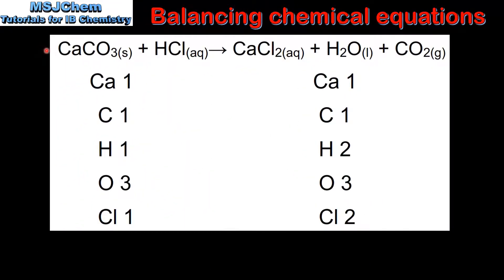In our next example we have the unbalanced equation for the reaction of calcium carbonate with hydrochloric acid to form calcium chloride, water and carbon dioxide. To balance the equation we need to count the number of atoms in the reactants and the products. In the reactants we have one calcium atom, one carbon atom, one hydrogen atom, three oxygen atoms and one chlorine atom.